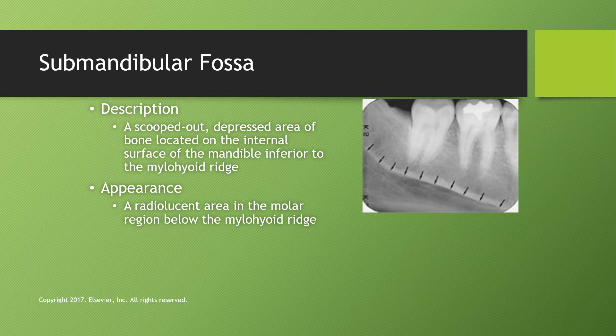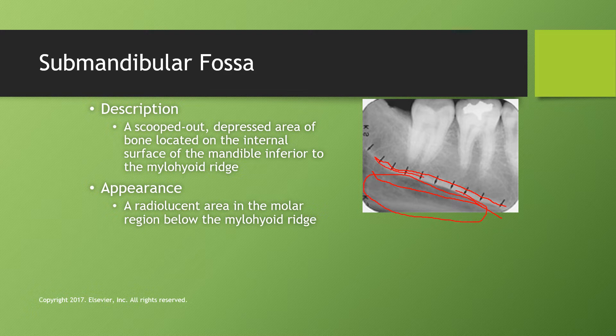The submandibular fossa is a scooped-out depressed area of bone on the internal surface of the mandible, inferior to the mylohyoid ridge — this is where the submandibular glands are located. It appears as a radiolucent area in the molar region below the mylohyoid ridge. Don't confuse the mylohyoid ridge with the mandibular canal: the mandibular canal has two radiopaque lines bounding a dark area, whereas the submandibular fossa has just one radiopaque line.